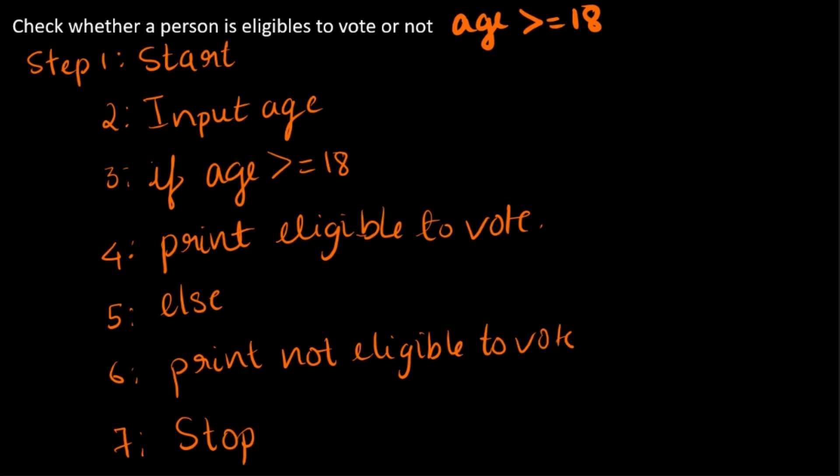The symbol is this. I discussed these symbols and few examples in detail in my previous lecture. First start, then you put an arrow. The next case is input.